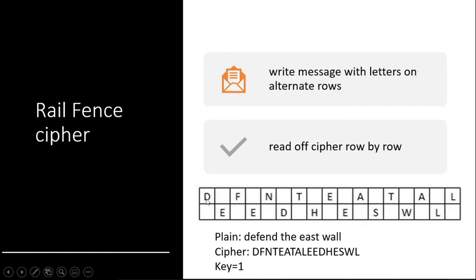And finally, what you will get when you read it line by line, that will be treated as ciphertext. So it is giving you cipher: D, F, N, T, E, A, T, A, L, E, and so on. Here, what is the key? Key is one, because only one letter you are skipping.